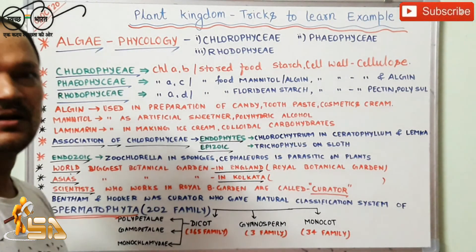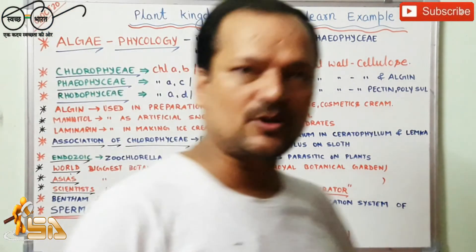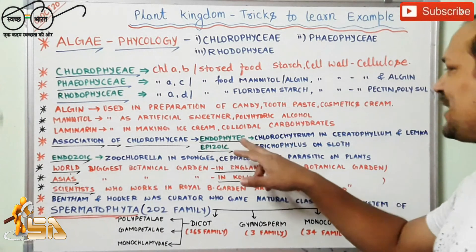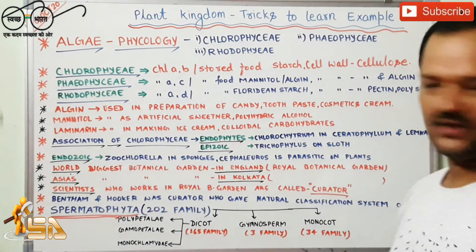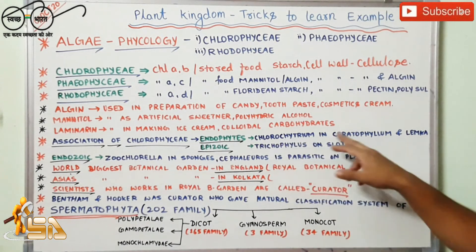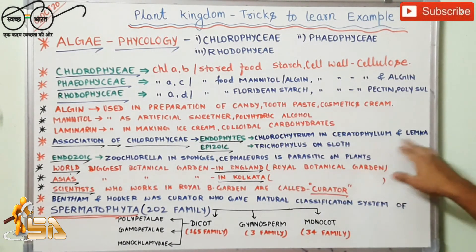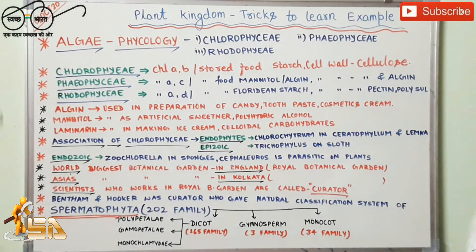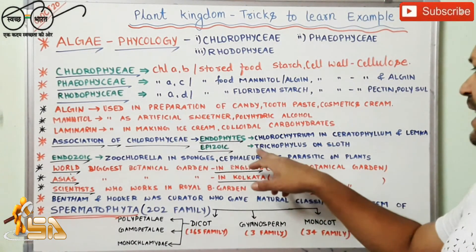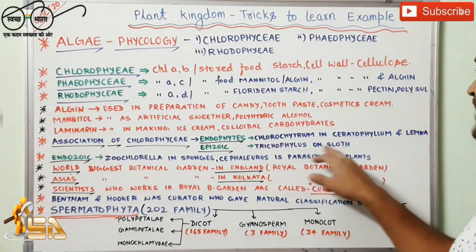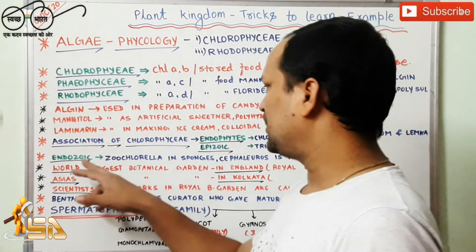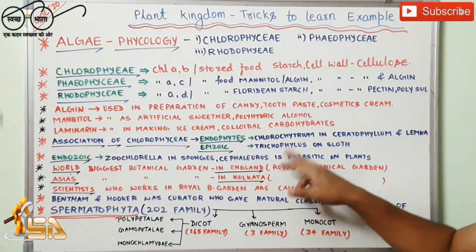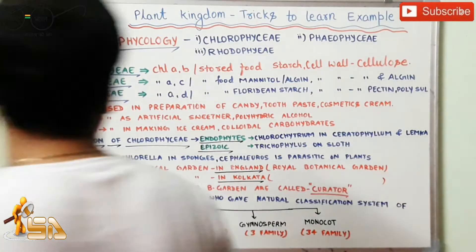Now we will discuss the associations of certain groups of algae. In these associations, some examples are endophyte, epizoic, and endozoic. Endophyte means two different plant associations — for example, Chlorochytrium associated with Ceratophyllum and Lemna. The second is epizoic, which is the association between plants and animals, such as the association of Trichophilus and sloths.